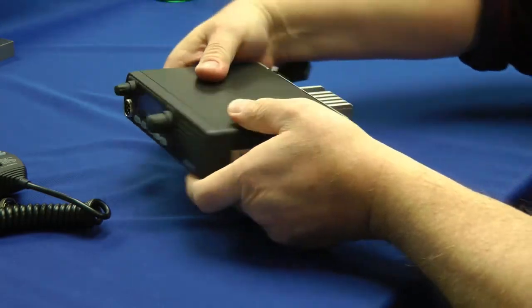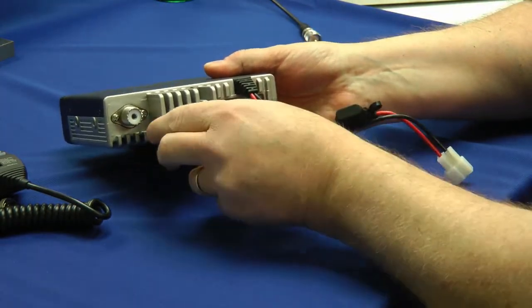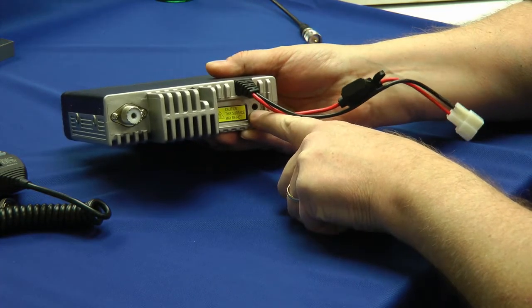Let's rotate it around. We see the antenna connection here. Another part of the heat-sync. This is your DC power cord, and that's for an external speaker.